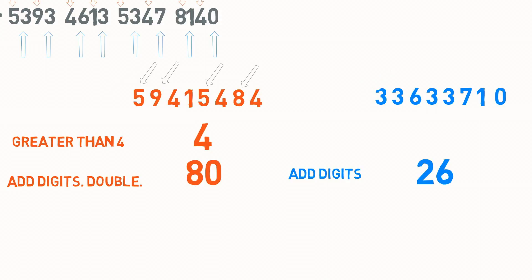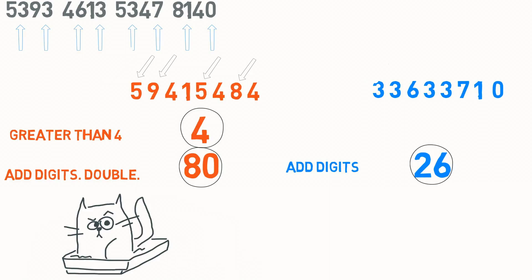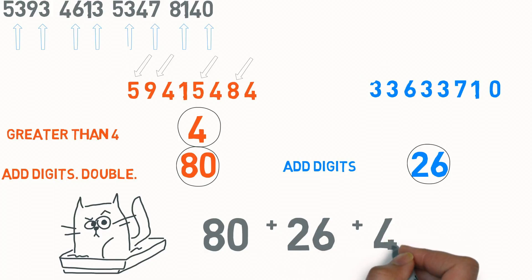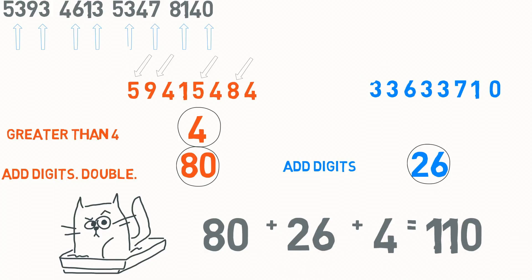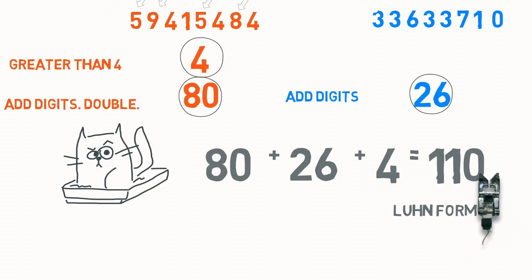Almost there. Now we will add these three numbers and then check the last digit of the result. In a valid credit card, this last digit of our answer should be 0. So let us test our results: we have 80 plus 26 plus 4, which is 110. And yes, the last digit is 0. This method is called the Luhn Formula and is used by websites to validate credit card numbers.